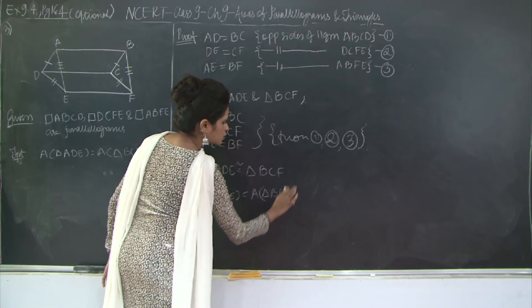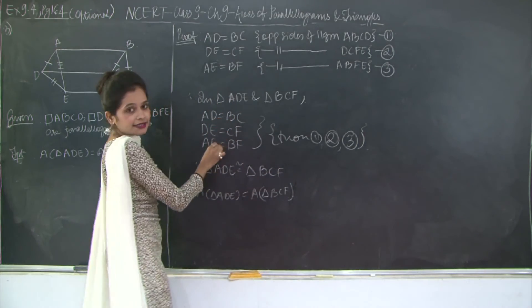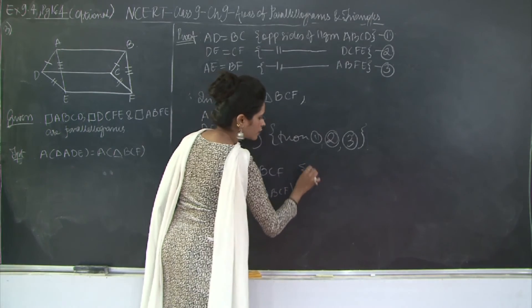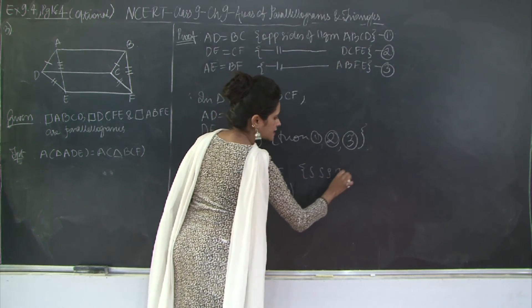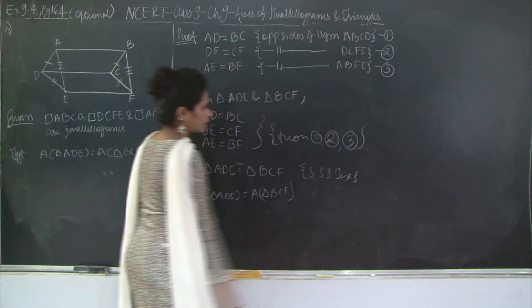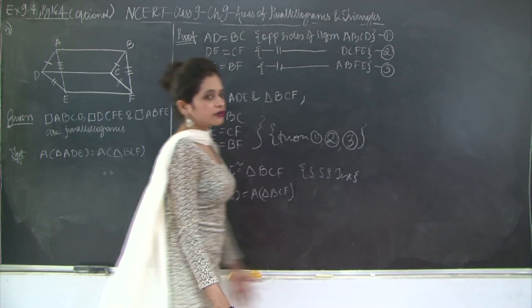And how are these two triangles congruent to each other? We have the three sides equal, right? Therefore, they are congruent by the SSS, that is side-side-side test of congruence. So this was about your question number 3.